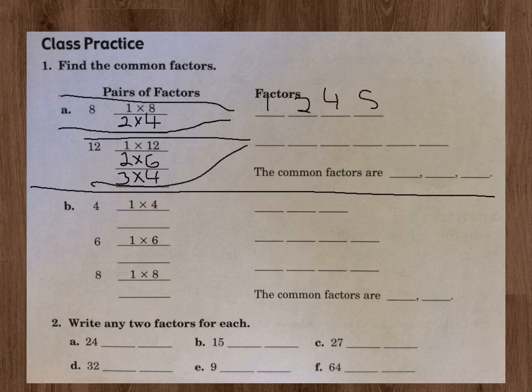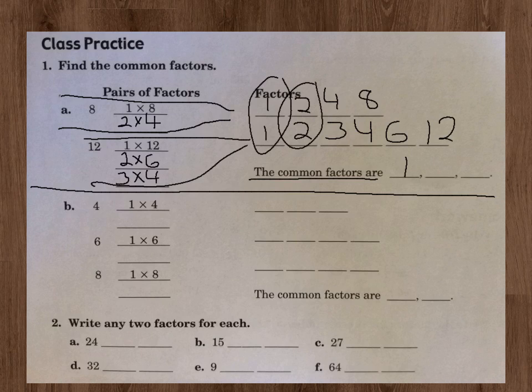Then we look at our 12 area, and we have 1 that came from right there, 2, 3, 4, 6, and 12. Now it's asking down here, the common factors are, well, they both have 1, they both have 2, and they both have 4.